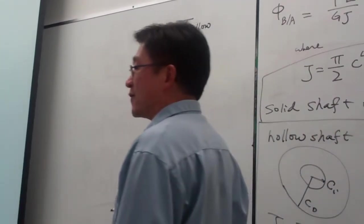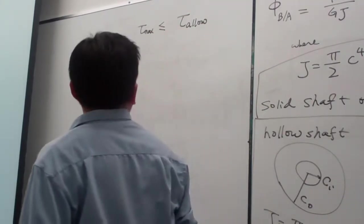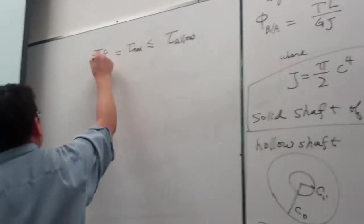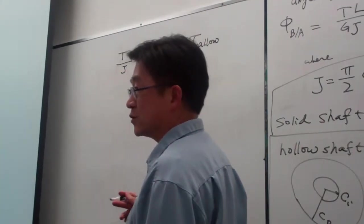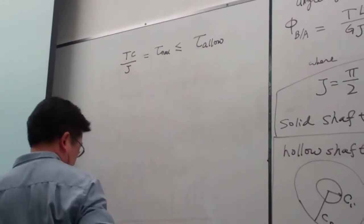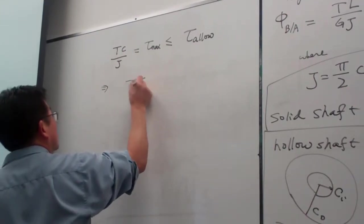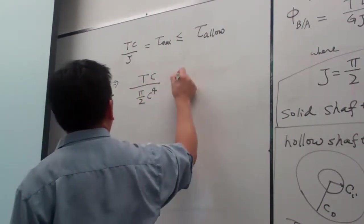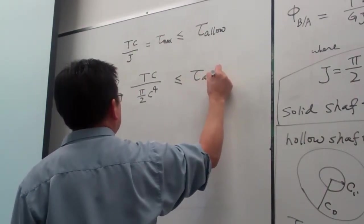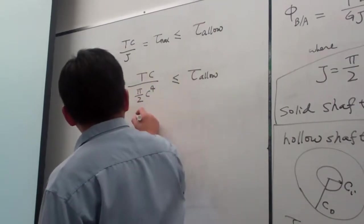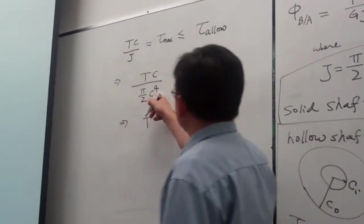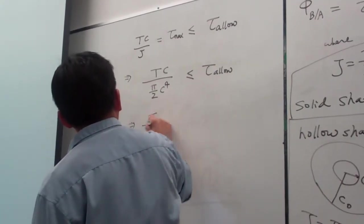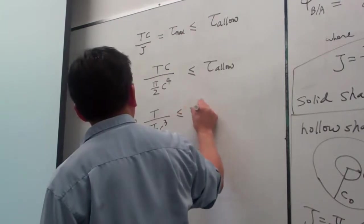For whatever the design, we have to guarantee the maximum stress is less than the allowable value. For our shaft, the maximum stress formula is TC over J. That simplifies — for the solid section it's pi over 2 times C to the fourth — and that must be less than or equal to the allowable stress. So the torque T must be less than or equal to T_allowable times pi over 2 times C cubed.